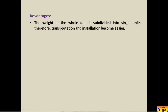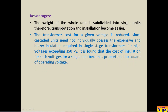Now let us see the advantages. The weight of the whole unit is subdivided into single units, therefore transportation and installation become easier. The transformer cost for a given voltage is reduced, since cascaded units need not individually possess the expensive and heavy insulation required in a single-stage transformer for high voltages exceeding 350 kV.